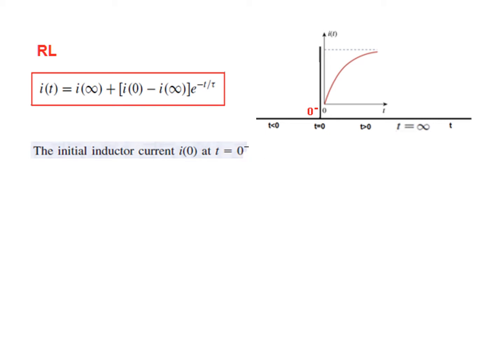Now what is the concept of t equals 0 minus? If we look at this time scale, this is where t equals 0. The point before this is t less than 0. Immediately before is a point we call t0 minus, and immediately after the point is also known as t0 plus.